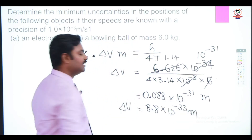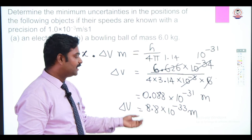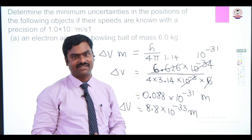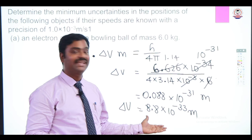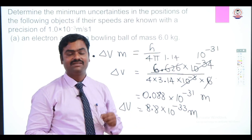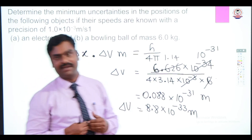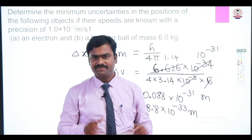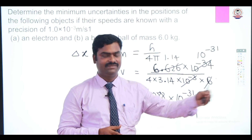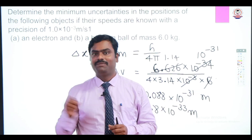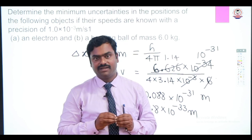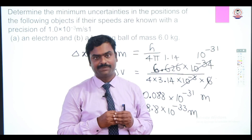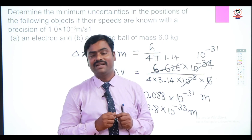For a macroscopic object, the error in velocity is 8.8 × 10⁻³³ m/s — extremely small, so we can neglect it and say there is essentially no error. But for a microscopic object like an electron, the error is maximum. This demonstrates, through both de Broglie's equation and Heisenberg's uncertainty principle, that microscopic particles behave differently from macroscopic particles — they have distinct properties.